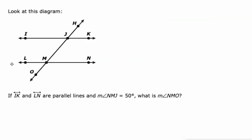Alright, IK and LN are parallel and they're cut by this transversal HO. They give us the measure of angle NMJ is 50 degrees. That's this angle right here — it's 50 degrees.